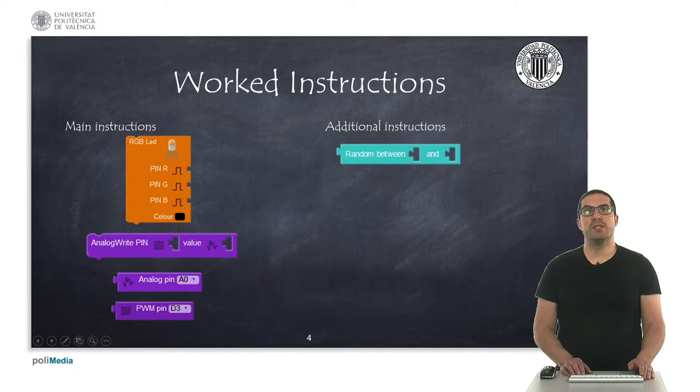These are the instructions that we will work in this presentation. The first instruction, the one in orange, is used so we can provide the pin where the RGB LED is connected. These are the pin numbers that we have to provide and this corresponds to pin numbers D9, D10 and D11 in the multi-sensor shield.